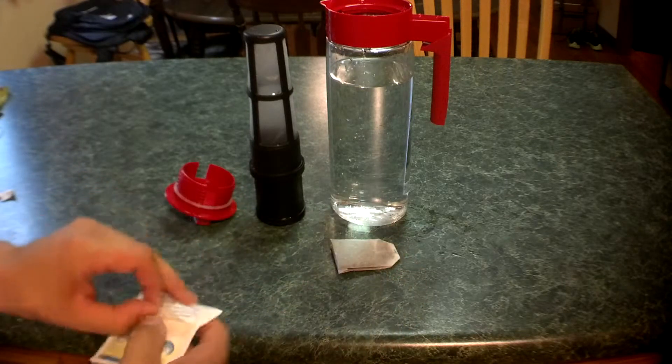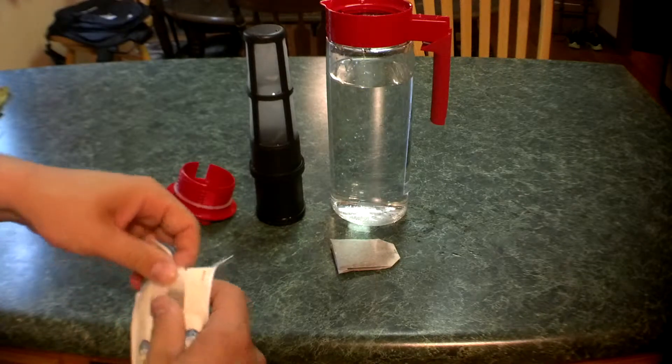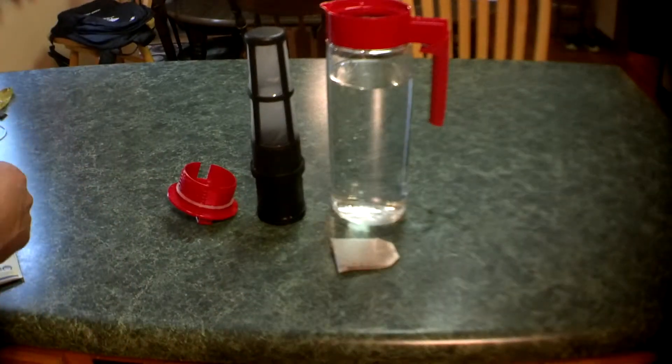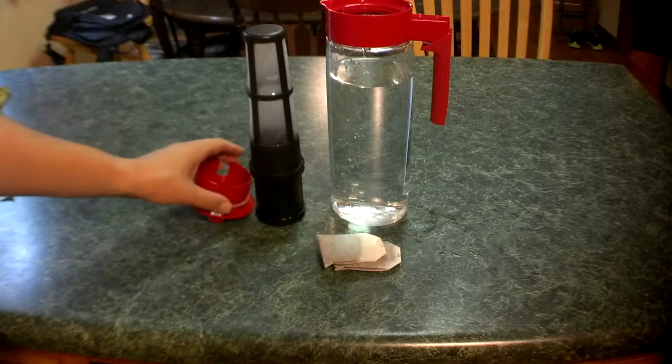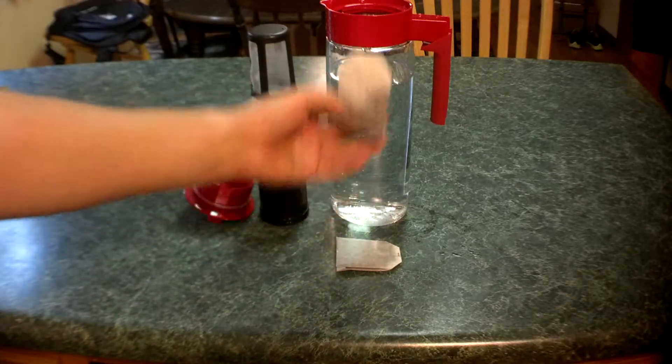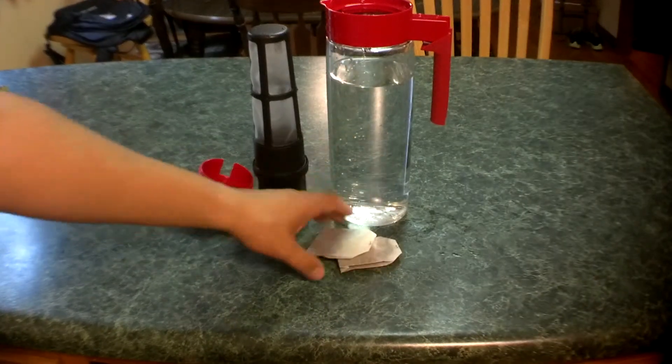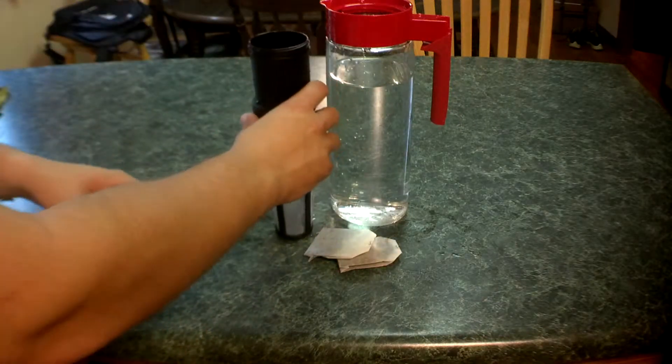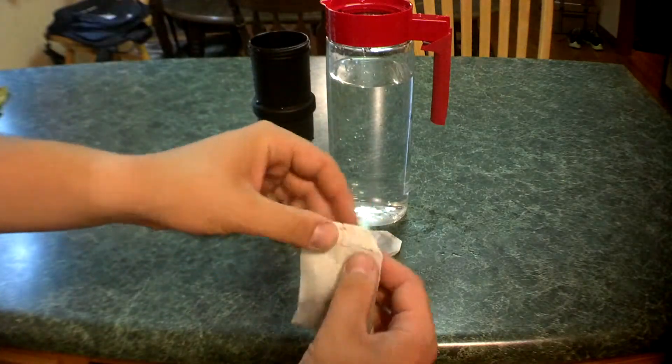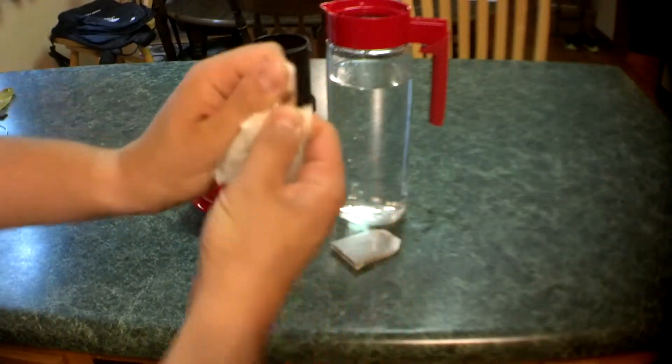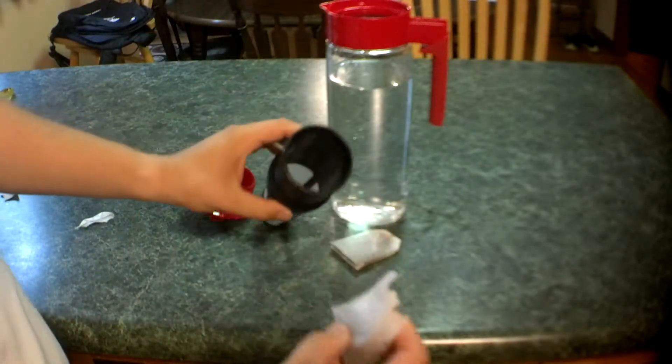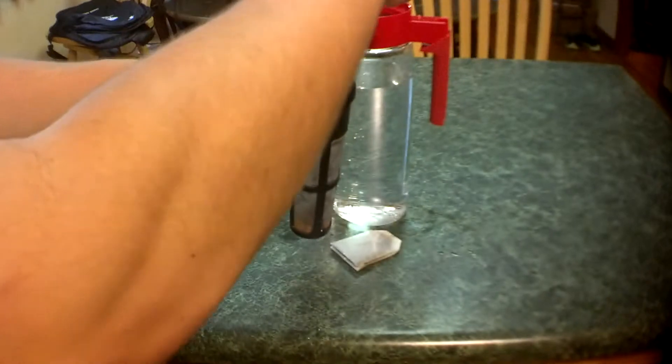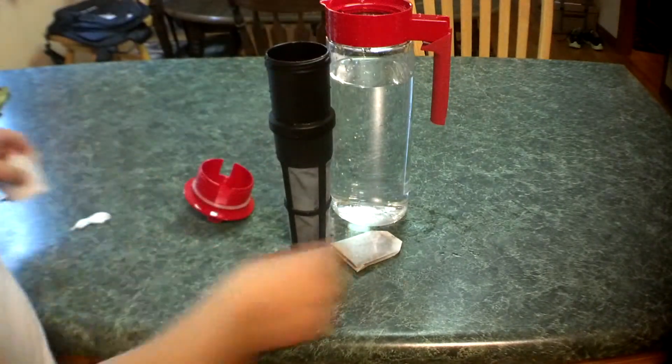Here we have some cold brew bags and we're going to be using a diffuser. I think it works much better than just dipping the tea bags in and removing them. So what we're going to do is rip open the tea bags and dump the contents inside this diffuser. And one more.